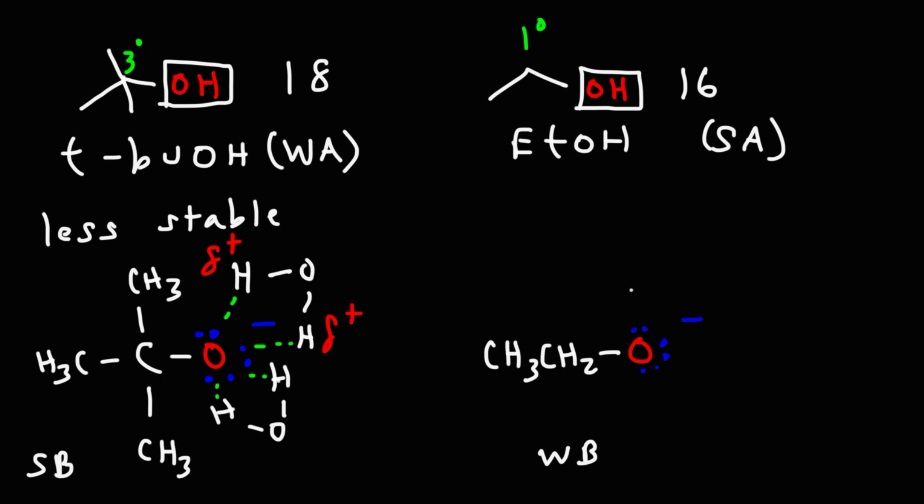Now in the case of ethoxide it's not sterically hindered as tert-butoxide. As a result we can get more solvent interactions. The more solvent interactions that we can have with the negatively charged oxygen the more we can stabilize that negative charge. So the more water molecules that we can surround the negatively charged oxygen the more we can stabilize it.